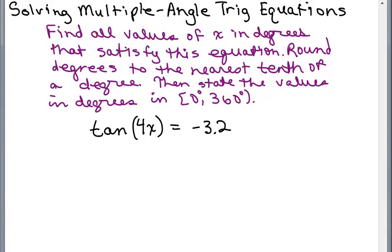We're going to solve this multiple angle trig equation and we're going to be using a calculator. So make sure you have a scientific or graphing calculator with you. Find all values of X in degrees that satisfy this equation. Round degrees to the nearest tenth of a degree and then we're also going to state the values in degrees in this interval 0 to 360 degrees.